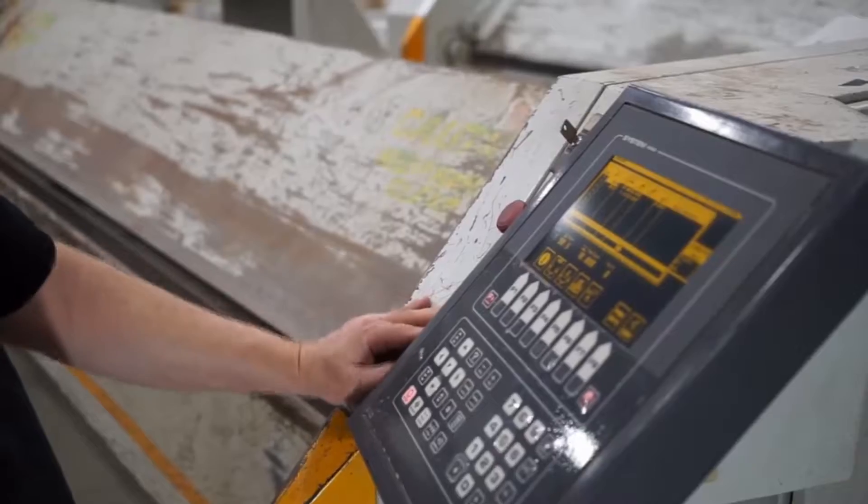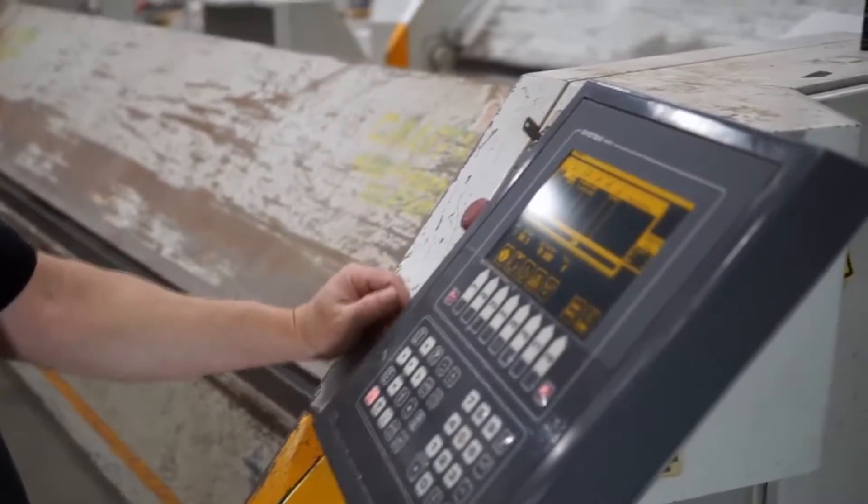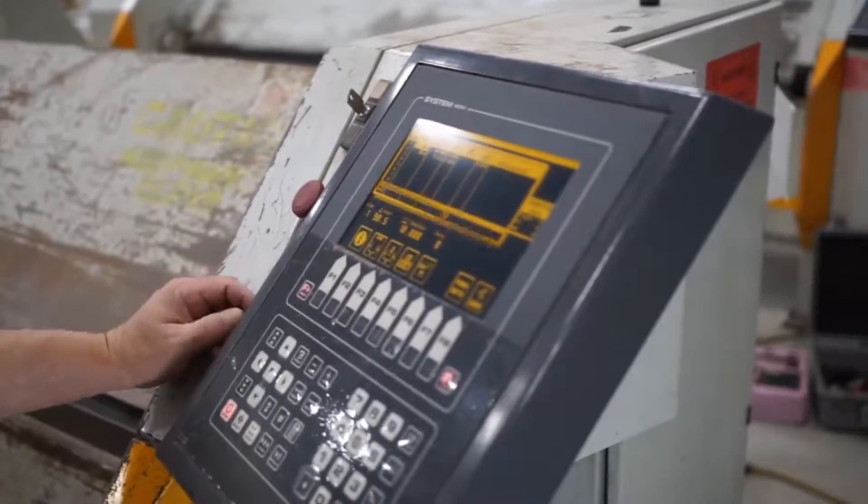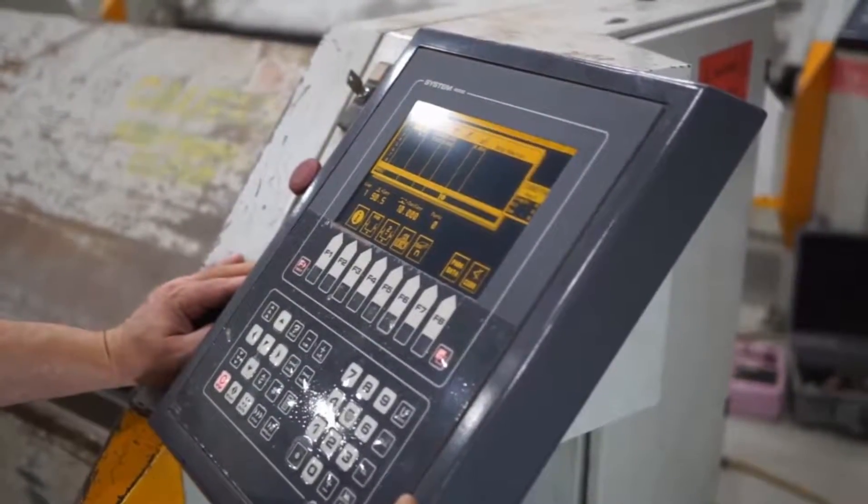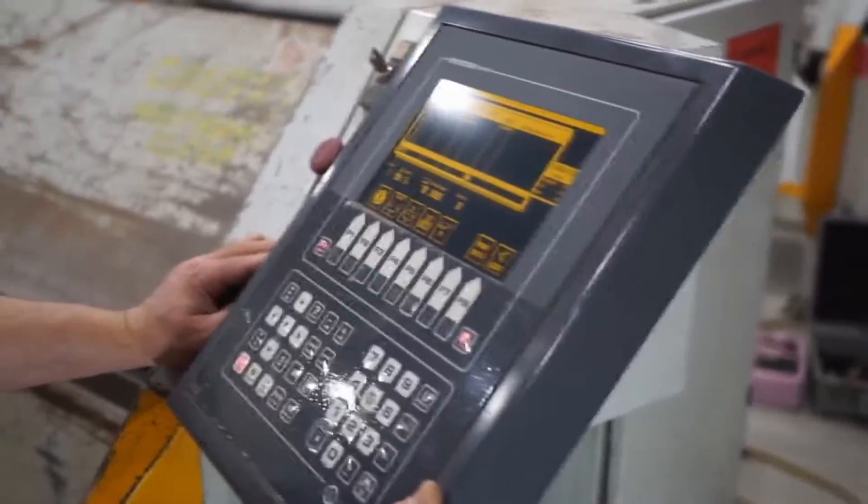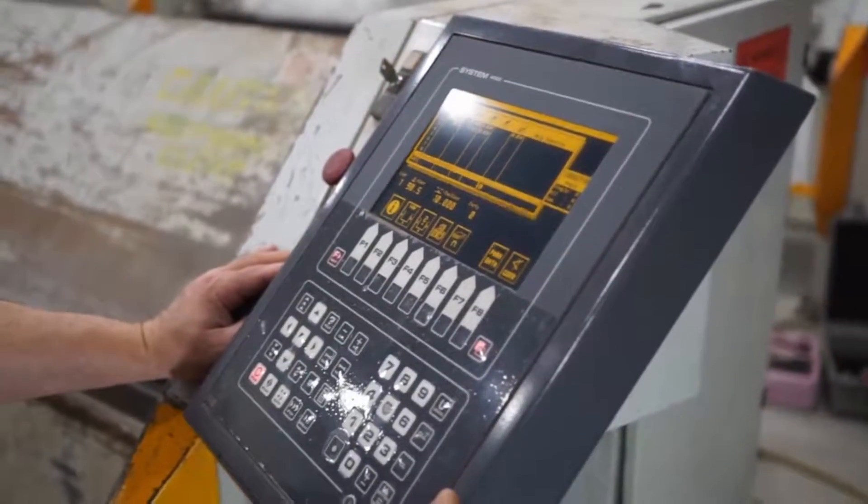So now that I'm in the control here, I'm on the program screen and for this scenario I'm just going to say that the upper beam is clamping too loose or too tight and I need to correct the zero point.